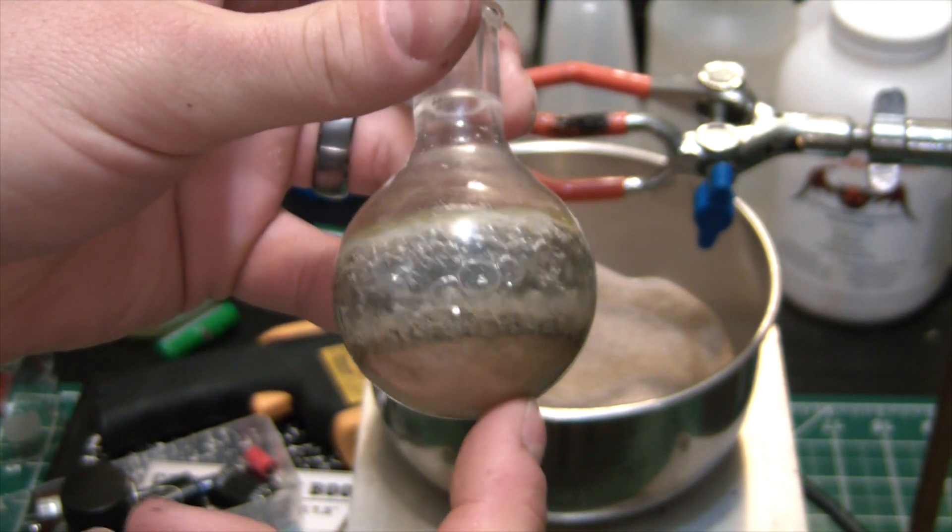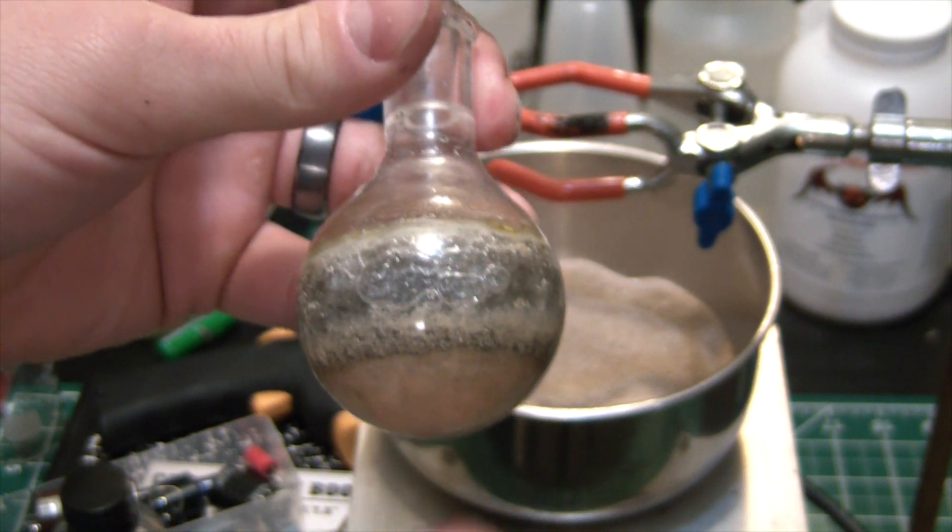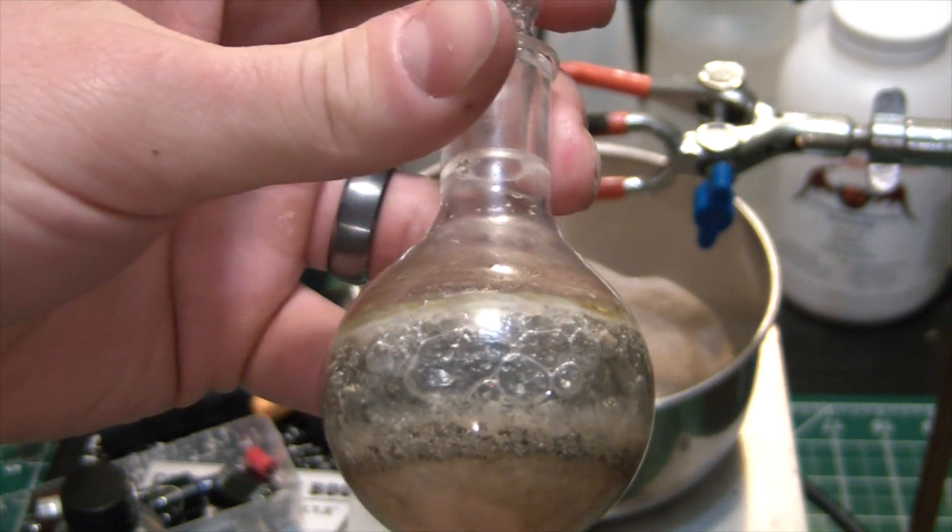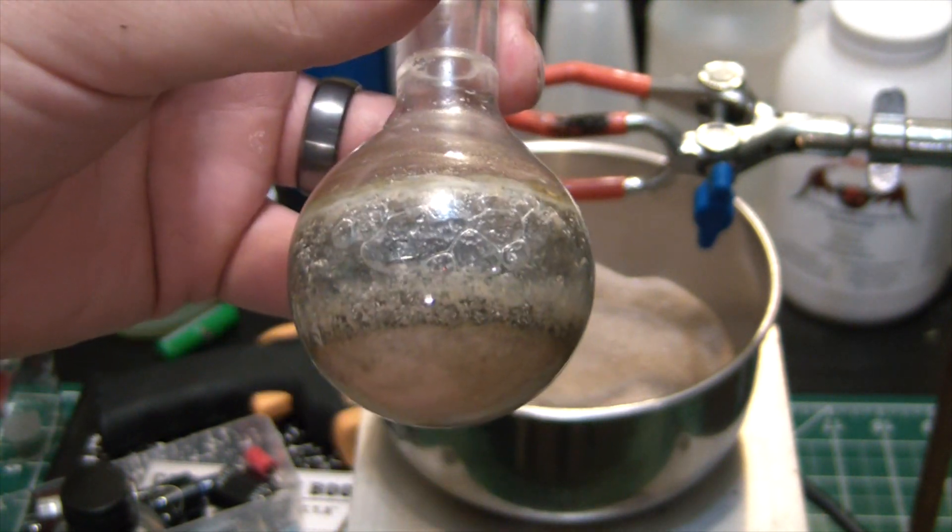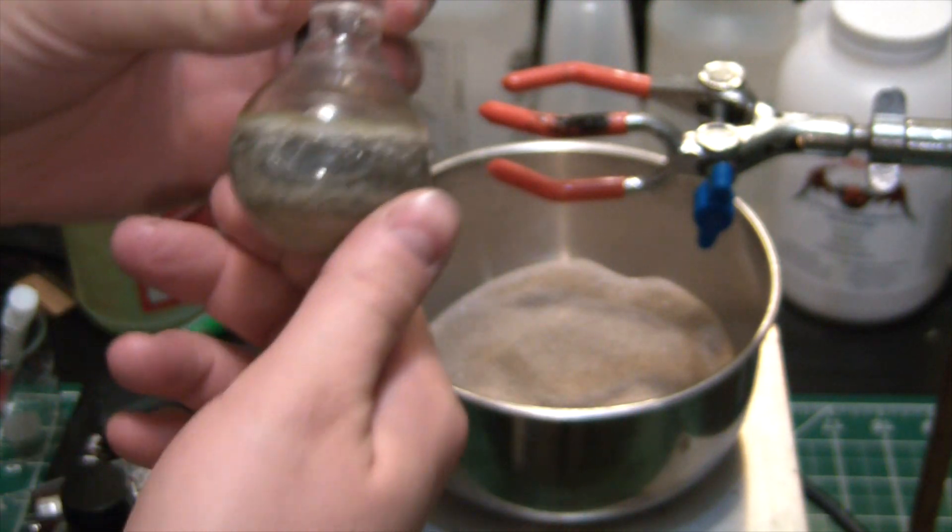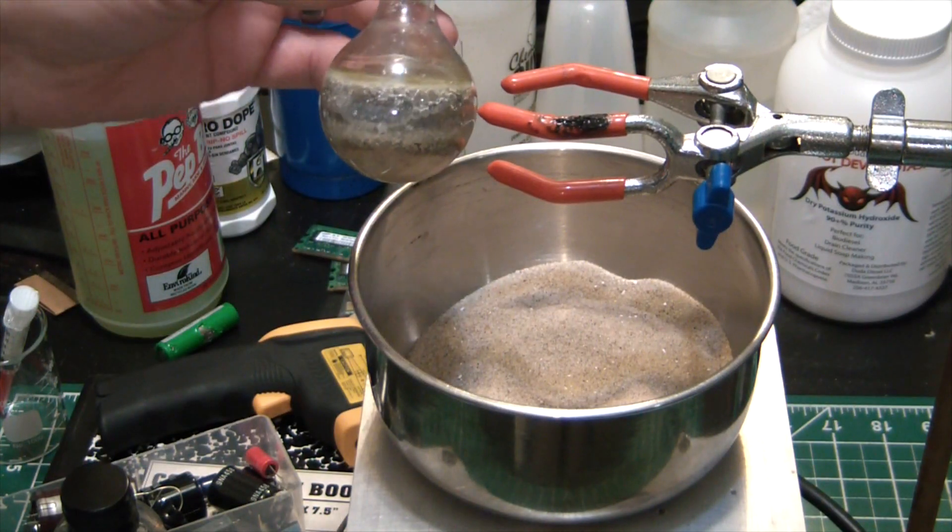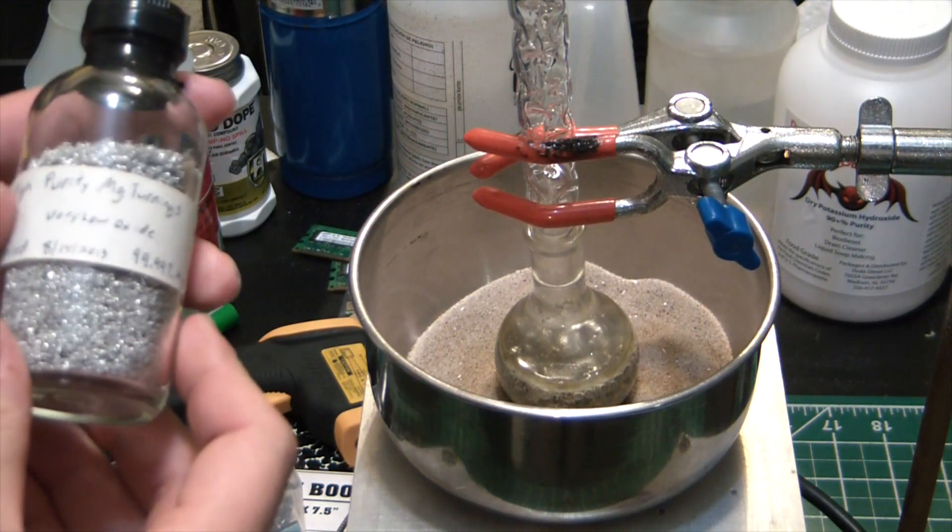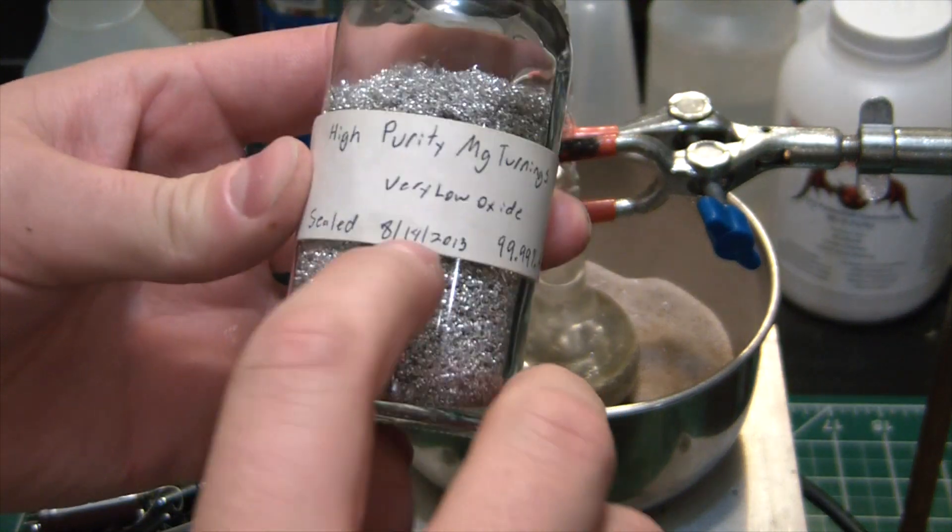Maybe what might be a better idea is mixing the magnesium turnings or chips and the potassium hydroxide before putting them into the reaction vessel and seeing how that goes. Now the other possible issue is the magnesium turnings, you can see.